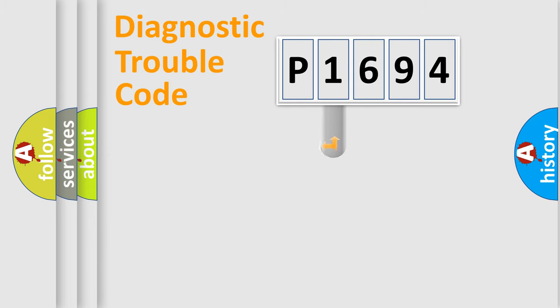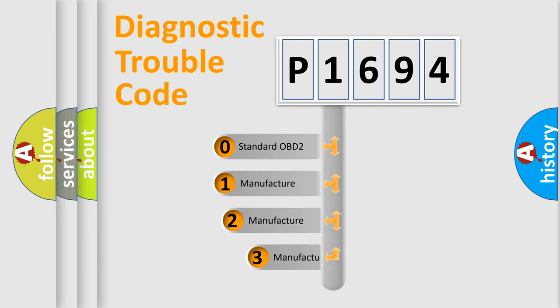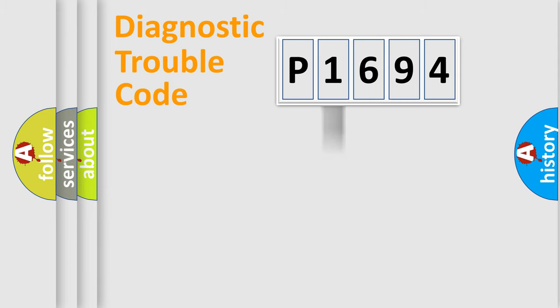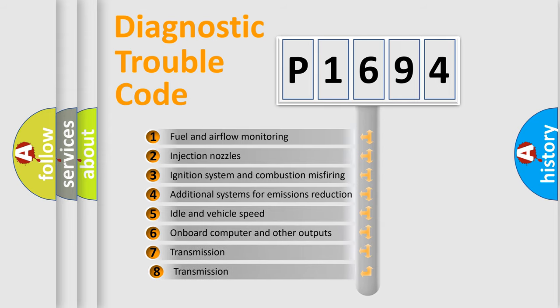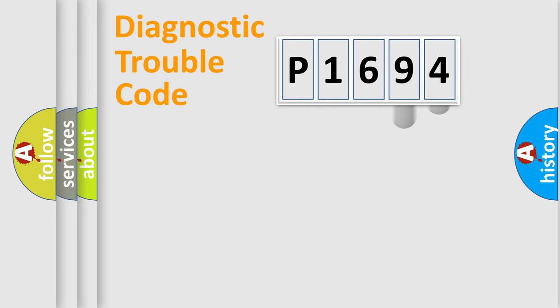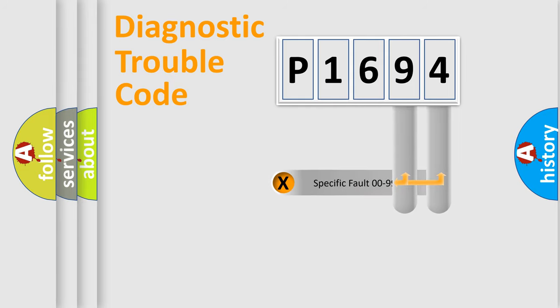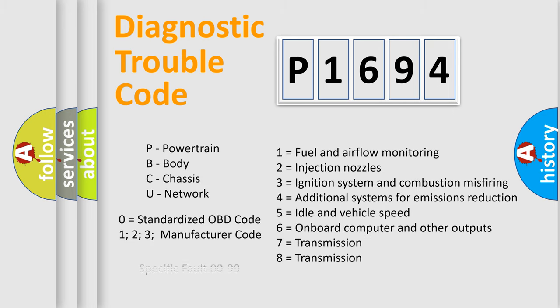This distribution is defined in the first character of the code. If the second character is expressed as zero, it is a standardized error. In the case of numbers 1, 2, or 3, it is a manufacturer-specific expression of a car-specific error. The third character specifies a subset of errors. The distribution shown is valid only for the standardized DTC code, and only the last two characters define the specific fault of the group. Such a division is valid only if the second character code is expressed by the number zero.